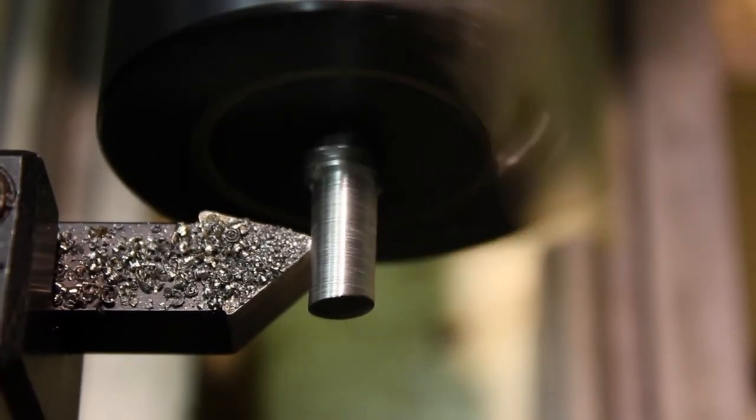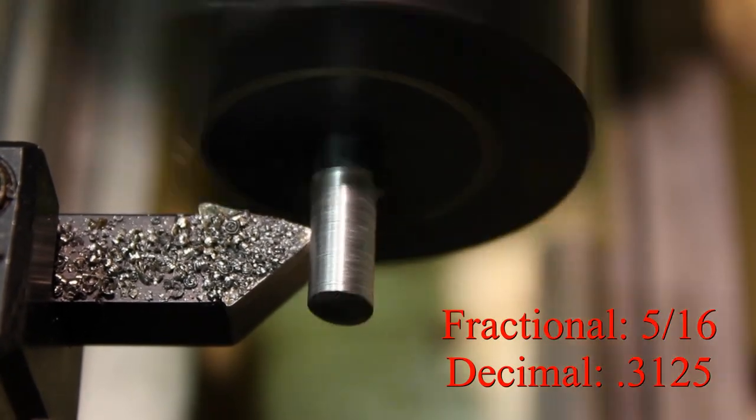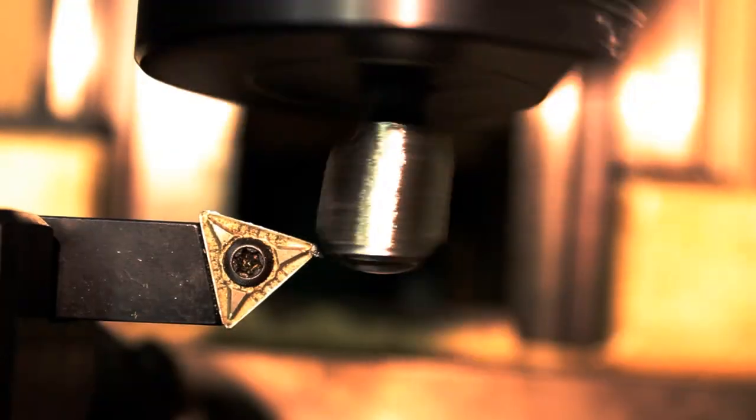Whether you're doing this by hand or on the lathe, the goal is to end up with a diameter of 5/16ths or 0.3125. The process is slow due to the odd shape and interrupted cut.